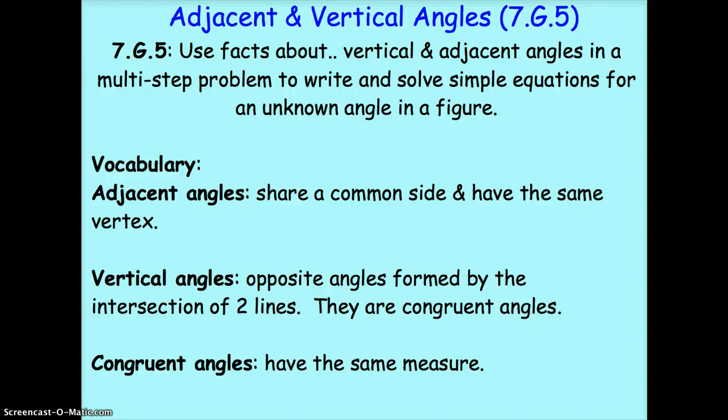Our vocabulary for today: we have three vocabulary words. Adjacent angles share a common side and have the same vertex. Next, vertical angles are opposite angles formed by the intersection of two lines. And it's important to remember they are always congruent angles, meaning congruent angles have the same measure. So vertical angles are always the same. They have the same measure.